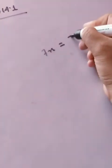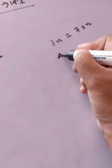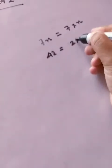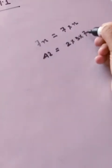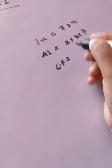That is 7x, so 7x can be written as 7 into x, isn't it? And 42 could be written as 2 into 3 into 7.